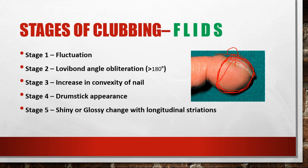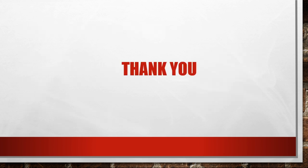Stage five: the nail appears shiny or glossy with longitudinal striations. This stage is also known as hypertrophic osteoarthropathy, as there is increased thickening of the periosteum of bones such as the radius, ulna, tibia, and fibula.